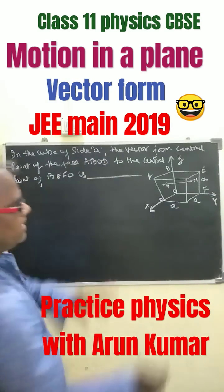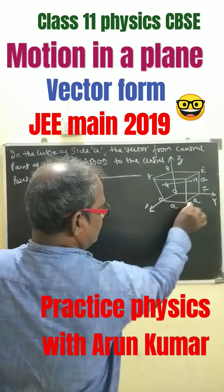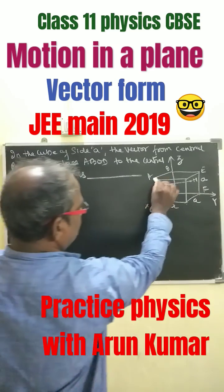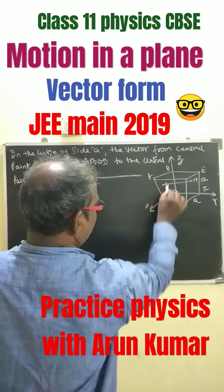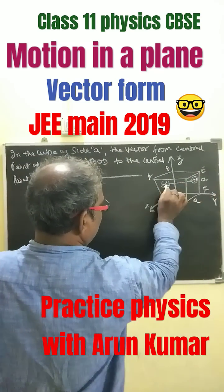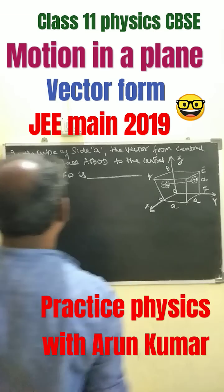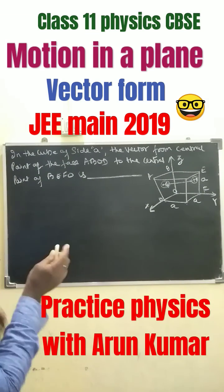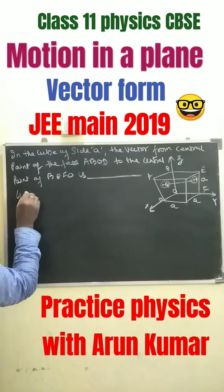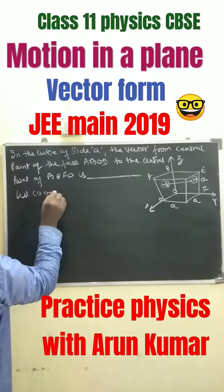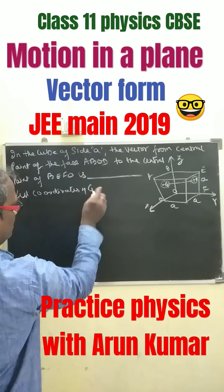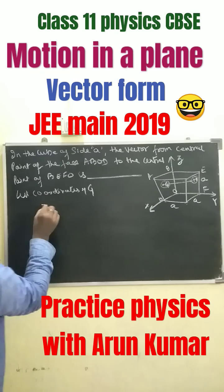In the given cube of side A, this side is A of the cube. We have to find out the vector form of the central point of the faces — this face, G and H. So we have to find out the vector form of the point of the faces. Let coordinates of G equal to: